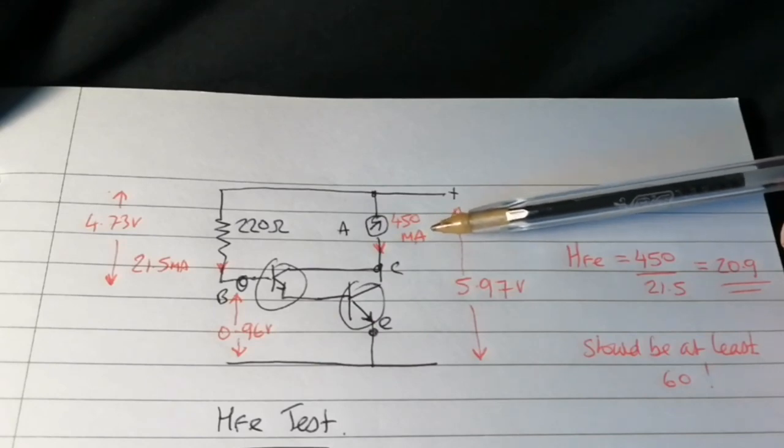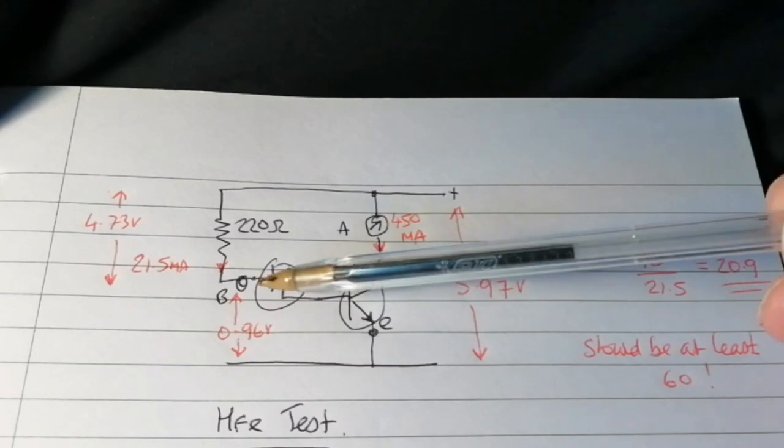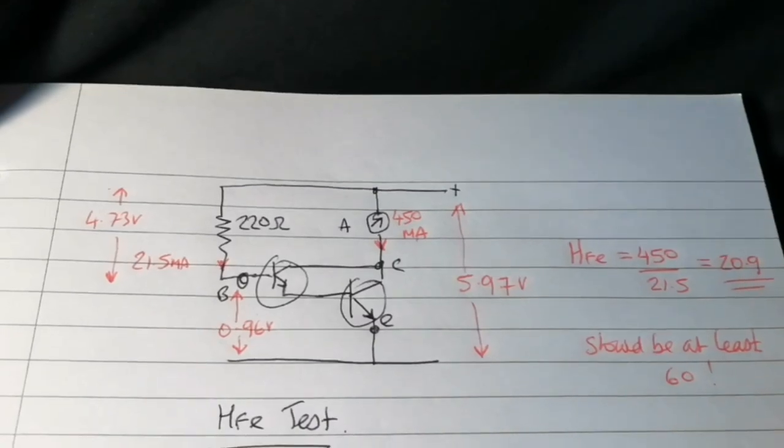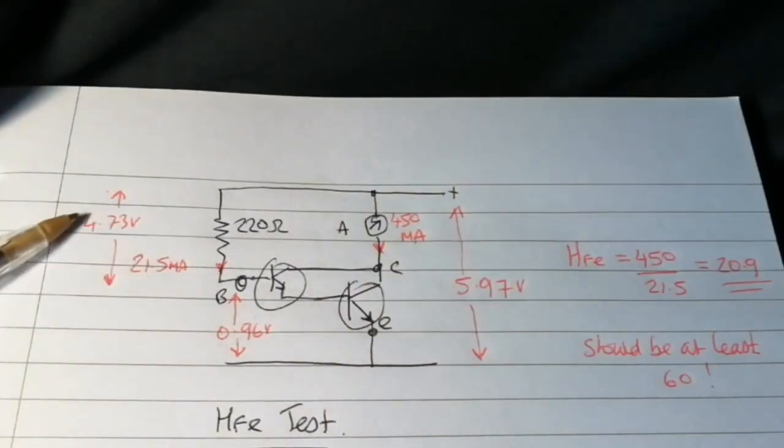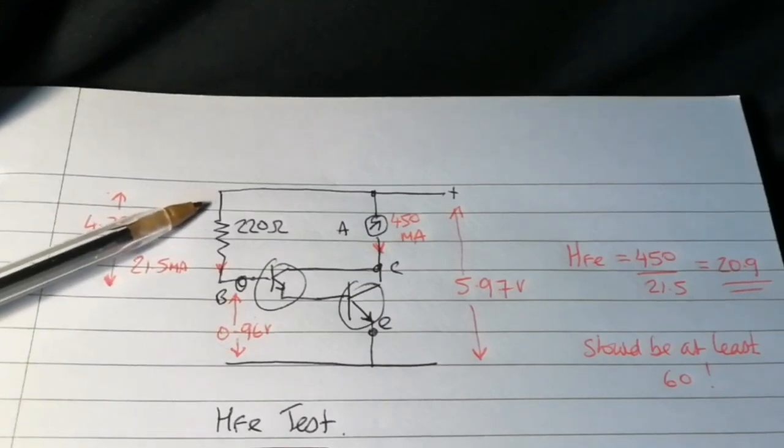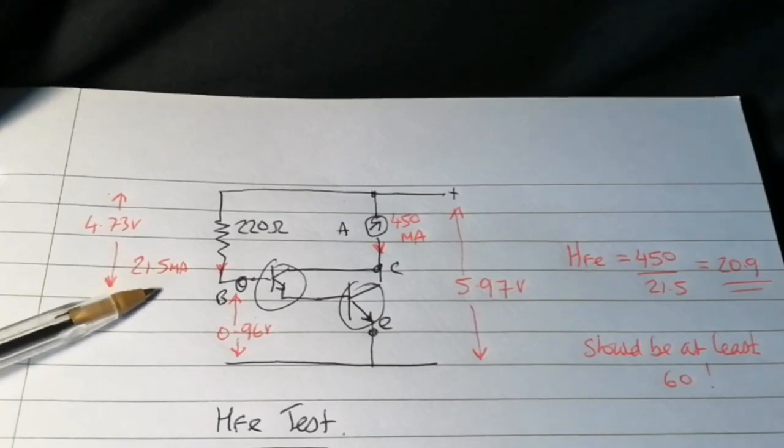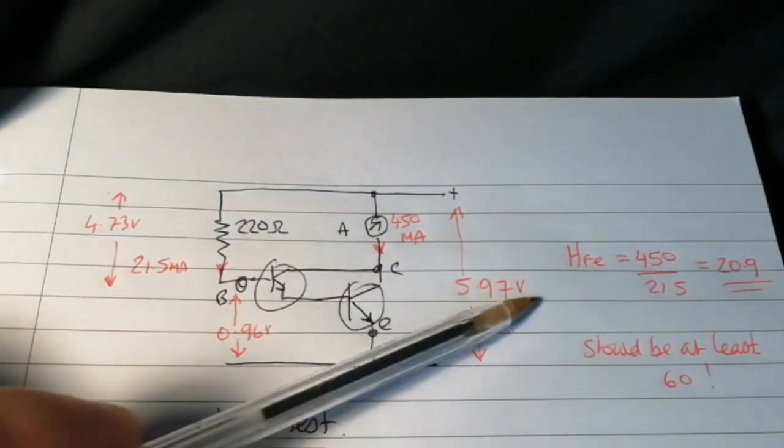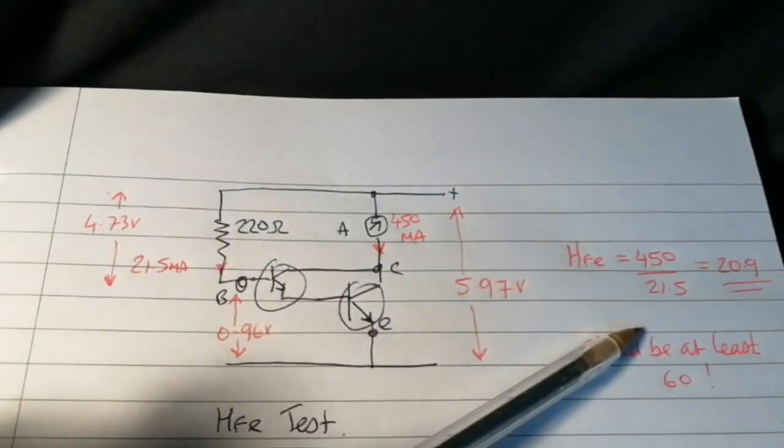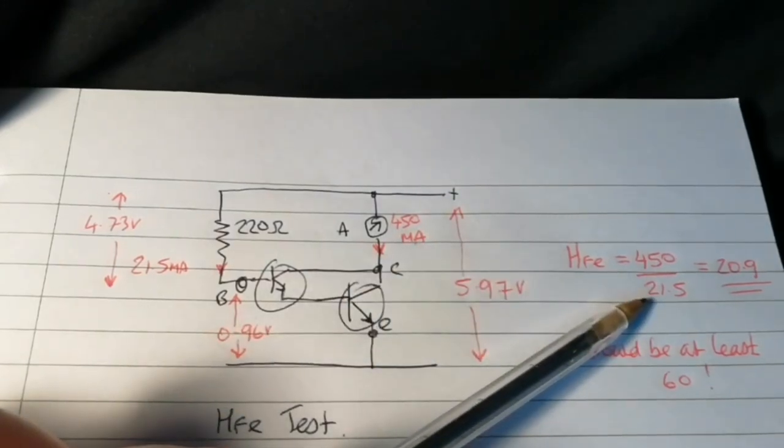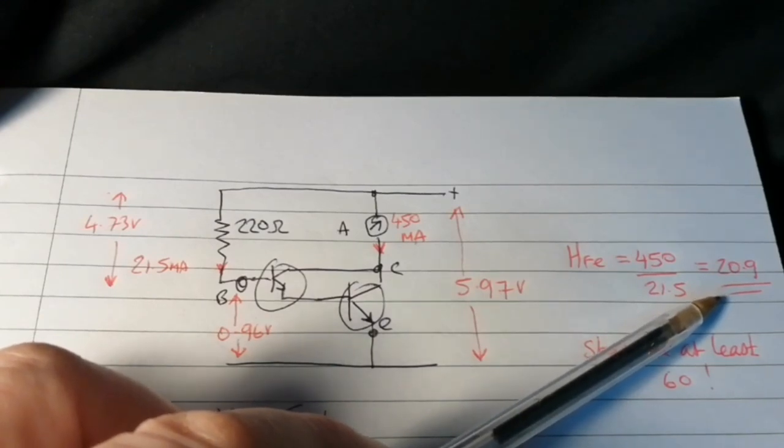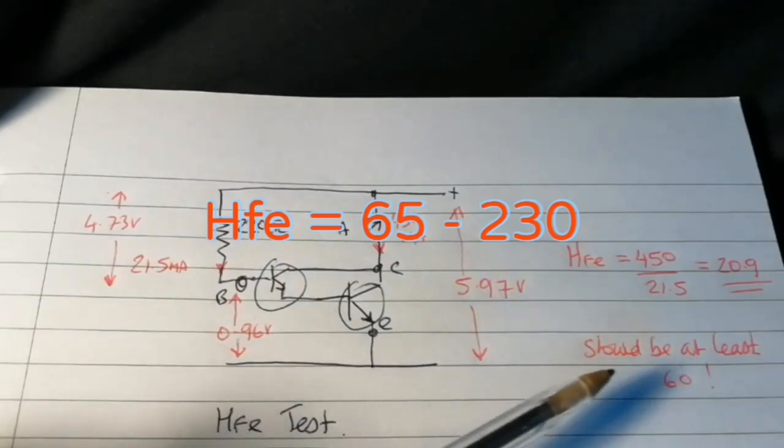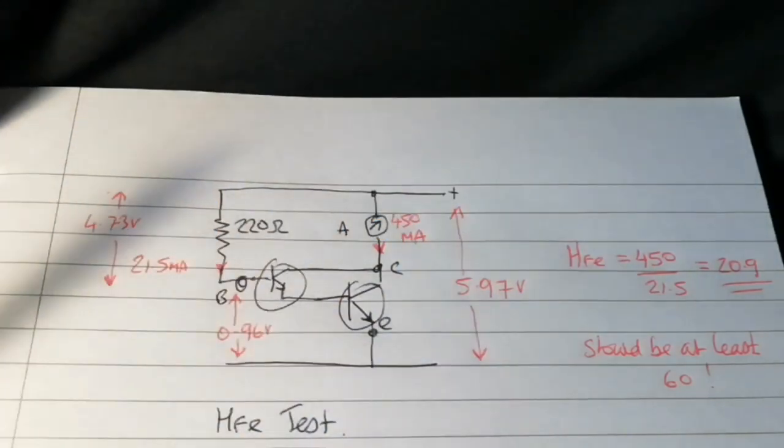There was 0.96V across the base-emitter, so that meant there were 4.73V across the 220Ω, which means there must be 21.5mA flowing into the base. Therefore, the HFE was the 450mA collector current divided by the 21.5mA base current, which gave a gain of 20.9. There should be at least 60 at this current, up to 200 or something like that. So clearly it hadn't got much gain either.